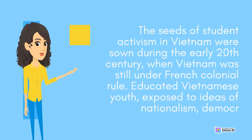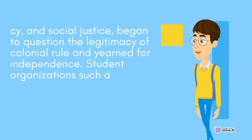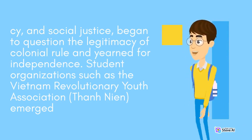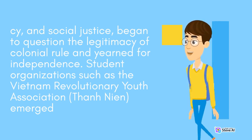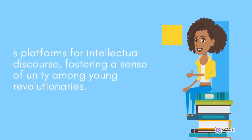The seeds of student activism in Vietnam were sown during the early 20th century, when Vietnam was still under French colonial rule. Educated Vietnamese youth, exposed to ideas of nationalism, democracy, and social justice, began to question the legitimacy of colonial rule and yearned for independence. Student organizations such as the Vietnam Revolutionary Youth Association emerged as platforms for intellectual discourse, fostering a sense of unity among young revolutionaries.